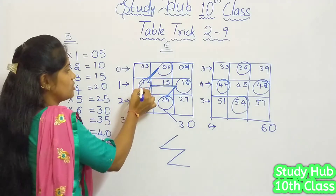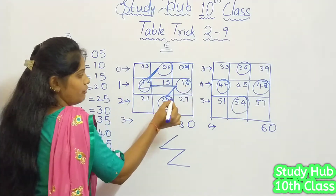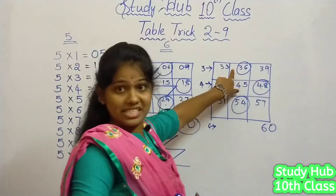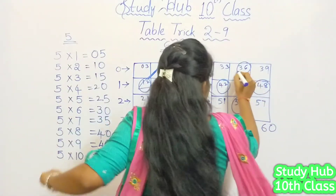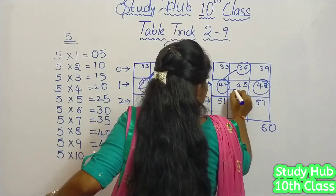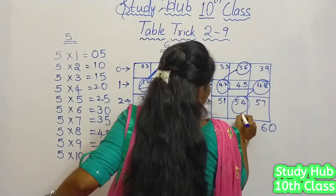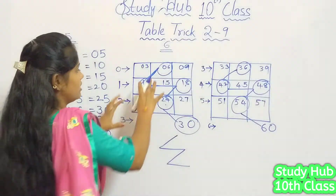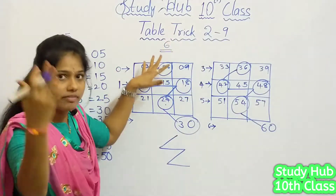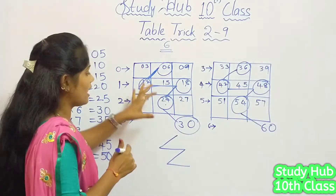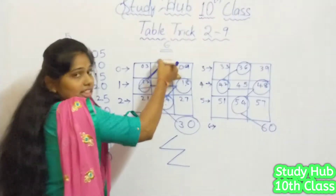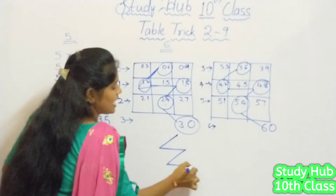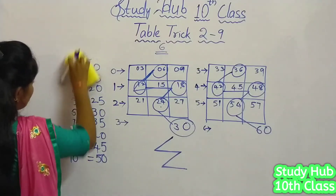Continuing: 6 ones are 6, 6 twos are 12, 6 threes are 18, 6 fours are 24, 6 fives are 30, 6 sixes are 36, 6 sevens are 42, 6 eights are 48, 6 nines are 54, and 6 tens are 60. This is the simple trick we have to use — fill the same numbers as before, circle the middle numbers, and then follow the zigzag.